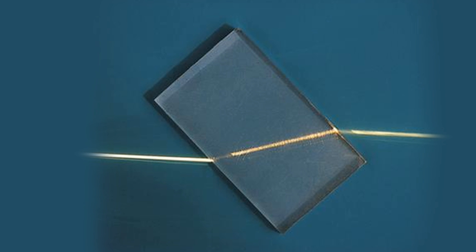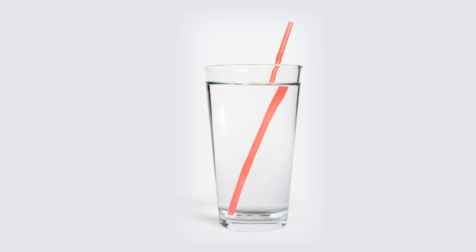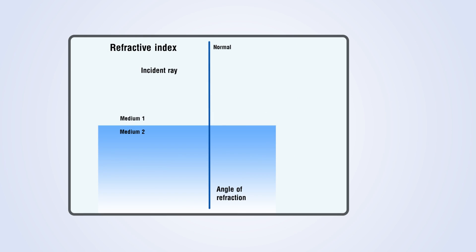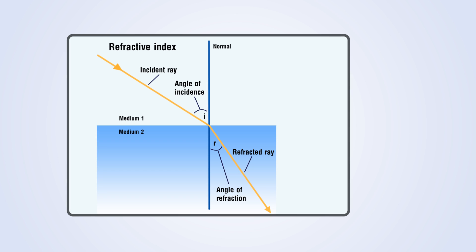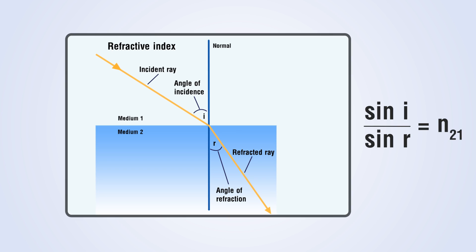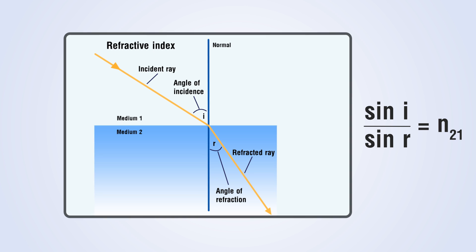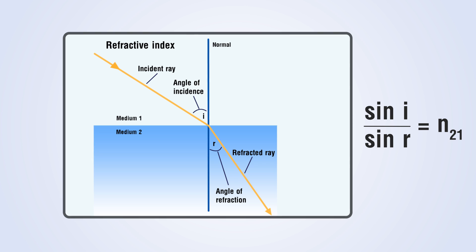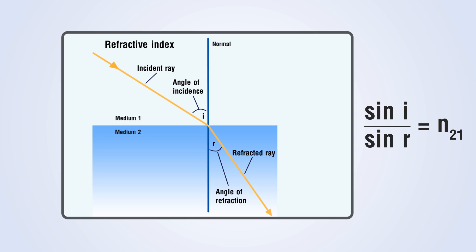A ray of light that travels obliquely from one transparent medium into another will change its direction in the second medium. If i is the angle of incidence and r is the angle of refraction, then the ratio of the sine of the angle of incidence to the sine of angle of refraction is a constant called the refractive index of the second medium with respect to the first medium.